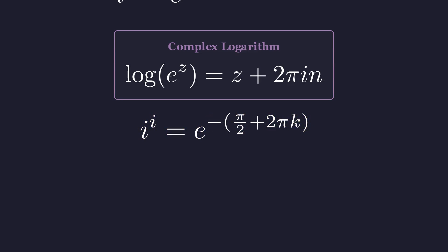What we're left with is e, to a purely real exponent. An imaginary number raised to an imaginary power gives us real numbers. Not just one, but infinitely many positive real numbers.